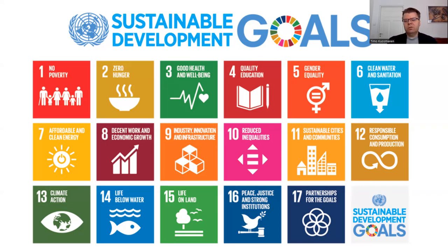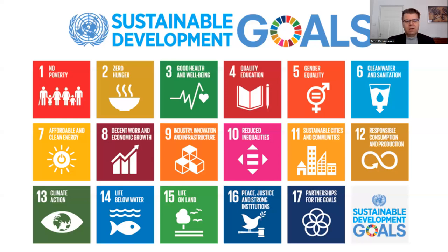Clean water is also related to the clean environment, but this goal is more stated from the perspective of human society — that there is clean water supply to human society. Then if you think of the middle row, goals seven to twelve are more related to economic sustainability. These include affordable and clean energy, decent work and economic growth, industry innovation and infrastructure, reduced inequalities, sustainable cities and communities, and responsible consumption and production. Quite clearly, goals seven to twelve are economic goals.